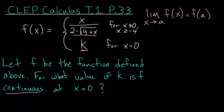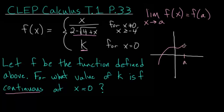To better understand this, let's look at an example where the function is not continuous. Say we have some function where at point a there's a hole in the graph. As x approaches a, the function approaches some value, but if you just plug in a into the function, it doesn't actually exist — so the limit does not equal the function evaluated at a. You could also have a case where the function evaluated at a is some value above or below the hole.